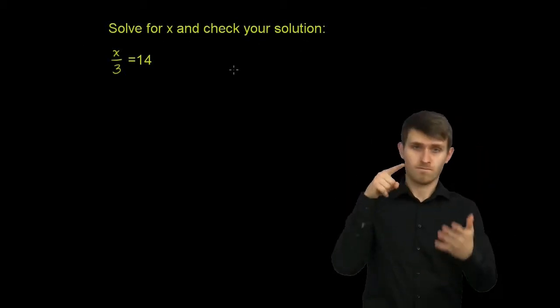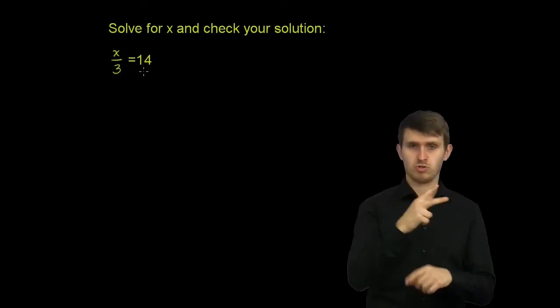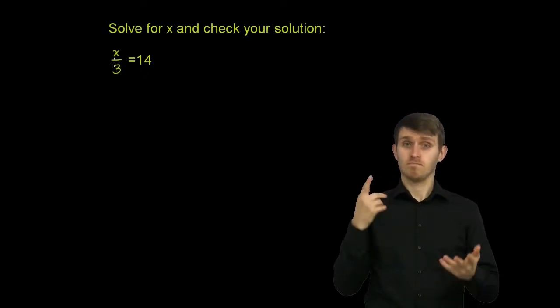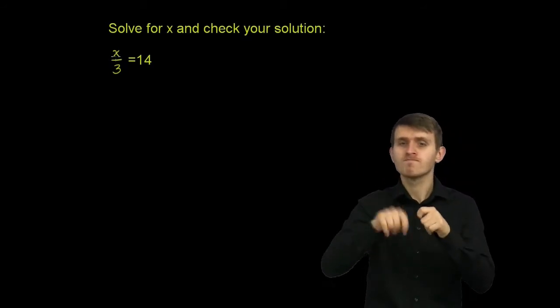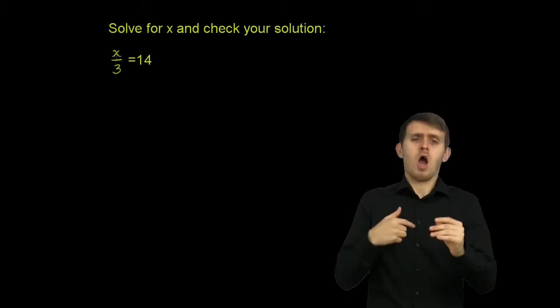Solve for x and check your solution. We have x divided by 3 is equal to 14. So to solve for x, to figure out what the variable x must be equal to, we really just have to isolate it on the left-hand side of this equation. It's already sitting there.